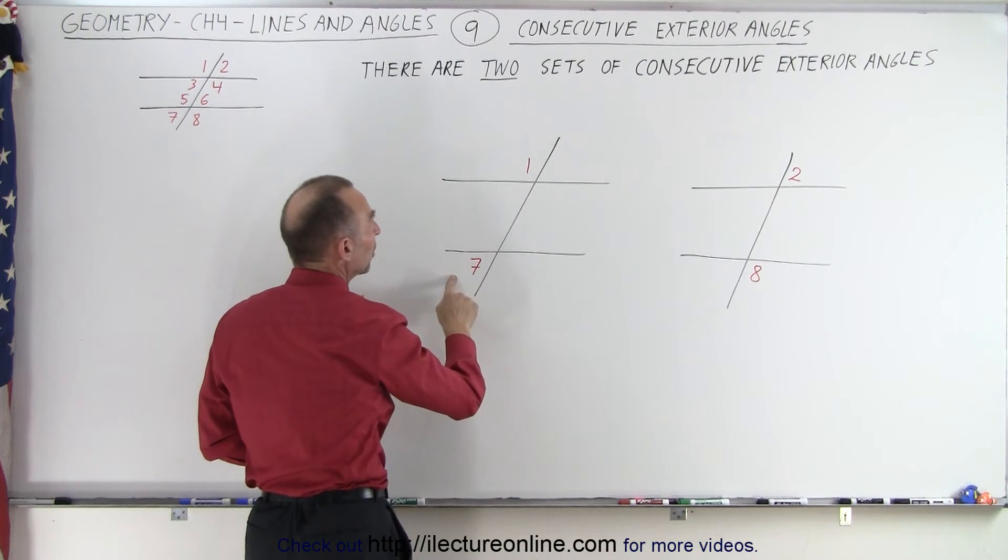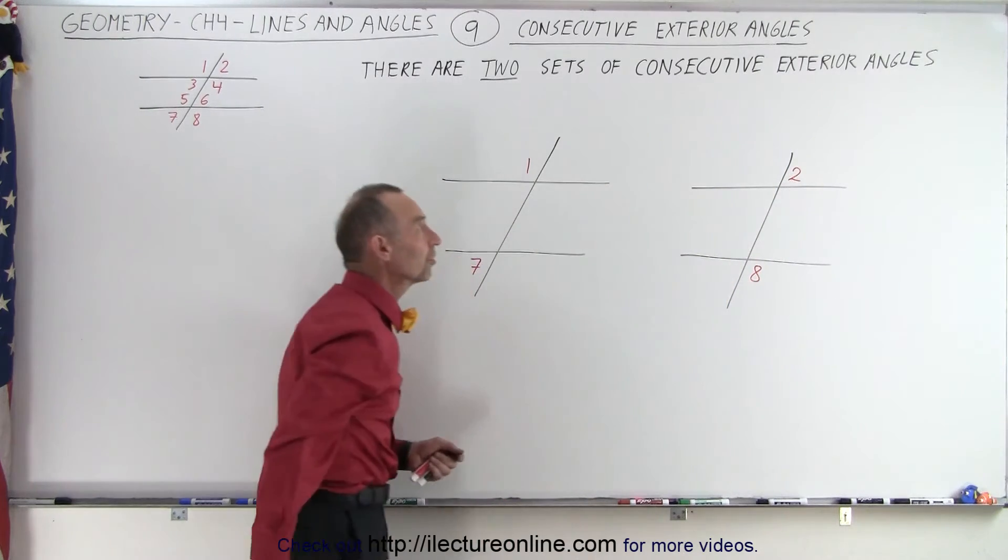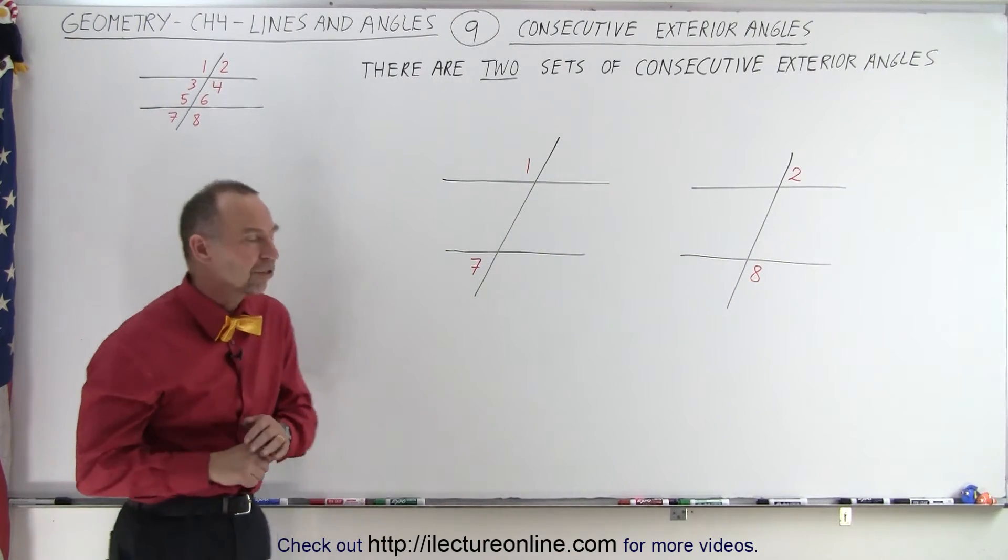So one and seven are what we call consecutive exterior angles, and two and eight are also considered consecutive exterior angles.